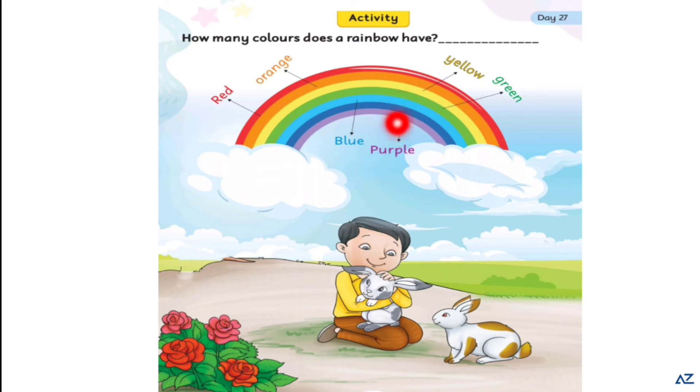Purple, dark blue, light blue, green, yellow, orange and red. There are 7 colors in a rainbow.